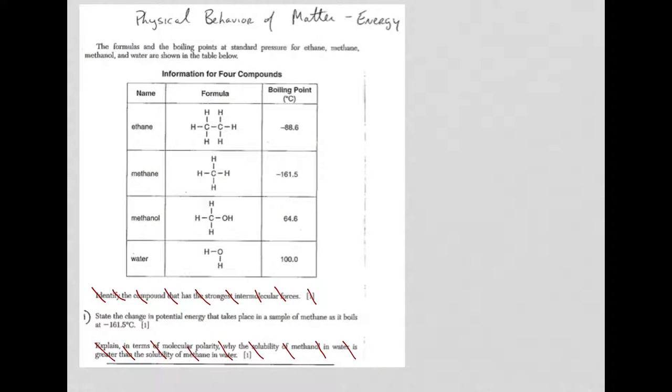Now here we have some matter, actually energy questions. In question one here under energy, it says state the change in potential energy that's taking place as methane boils. And lo and behold, it's boiling here at its boiling point, the negative 161.5.